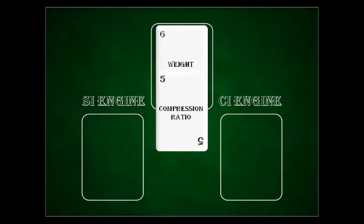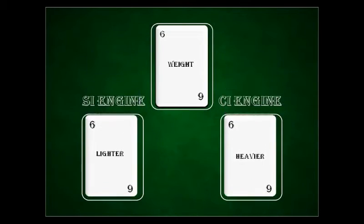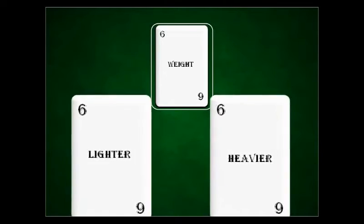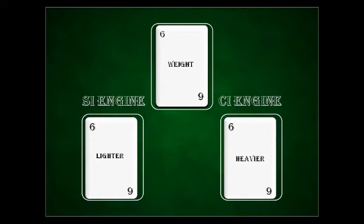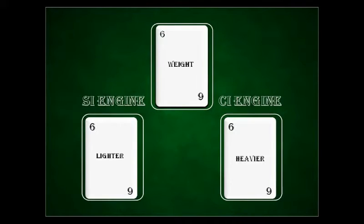Next is the weight of the engine. In CI engines, the higher compression ratio produces high pressure inside the engine. To withstand this high pressure, the walls of the engines are made thicker to increase their strength. This is one reason why diesel engines are not usually preferred in bikes, as they increase the weight and vibration makes the ride gruesome. Hence CI engines are heavier than SI engines. CI engines also contain sophisticated equipment like fuel pumps and injectors, which adds more weight compared to SI engines.